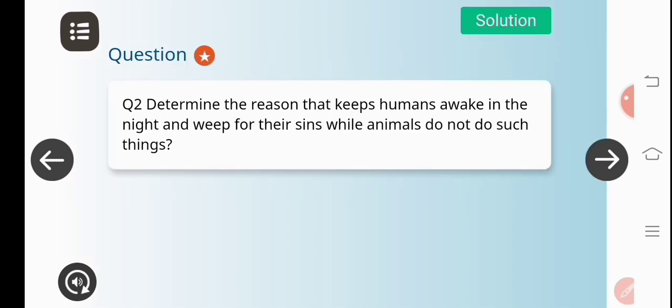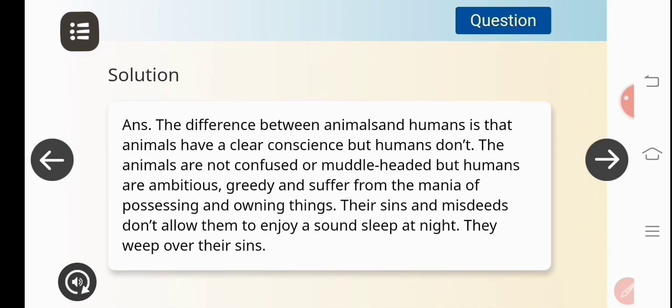Next question would be: Determine the reason that keeps humans awake at night and weep for their sins while animals do not do such things. The answer would be: The difference between animals and humans is that animals have a clear conscience but humans don't. The animals are not confused or muddled-headed, but humans are ambitious, greedy and suffer from the mania of possessing and owning things. Their sins and misdeeds don't allow them to enjoy a sound sleep at night. They weep over their sins.